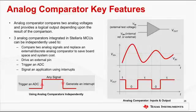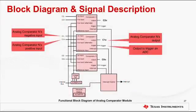The interrupt generation and ADC triggering logic is separate and independent. This flexibility means, for example, that an interrupt can be generated on a rising edge and the ADC can be triggered on a falling edge. The block diagram of the analog comparator module is shown on the screen. It includes three identical analog comparators, each with its own pair of inputs, CN+ and CN-, an output CN-out, and a trigger signal that can be used to initiate an ADC sample sequence.